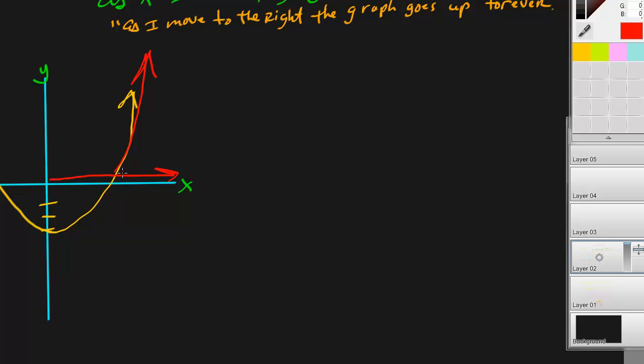Okay, so as I move to the right on this graph, this thing is going to go up to positive infinity. Now I was that was real smart to make dotted lines there.